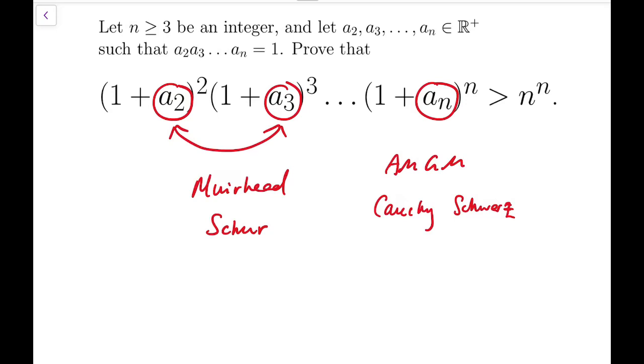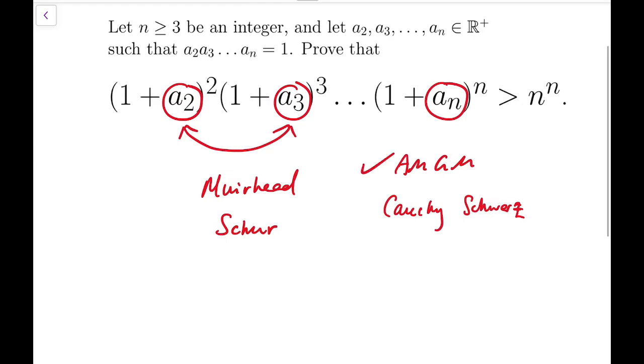So we actually only have n minus 1 variables. Now to make use of this product, we need to change the degree of the variables. For a₂ we're going to have degree 2, for a₃ degree 3, and similarly for aₙ we're going to have degree n. So the best way to adjust the powers, adjust the degrees very flexibly, is to use the AM-GM.